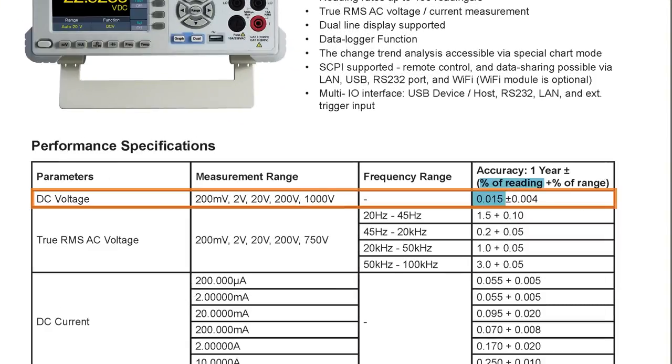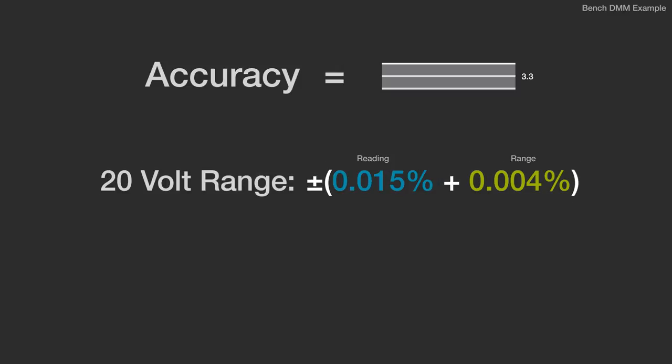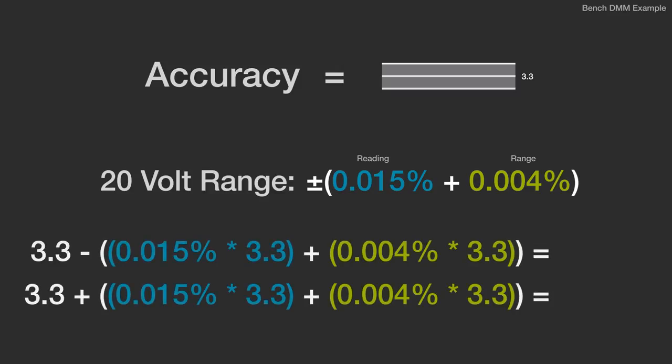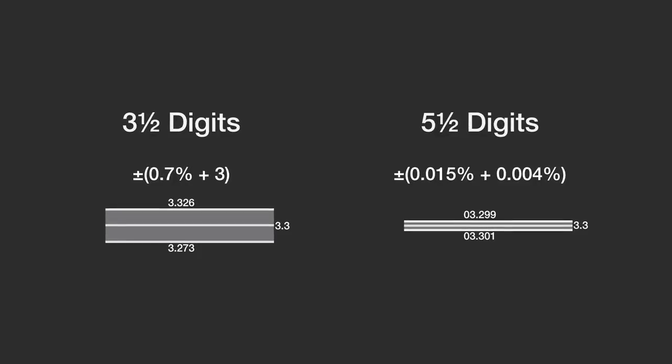It is specified as 0.015 percent of the reading plus 0.004 percent of the range, which is way better than a handheld. For our example 3.3 volt signal, it would require the 20 volt range, which means the math works out to be from 3.299 and 3.301. Keep in mind that because we used the 20 volt range for this measurement, we effectively lost one digit of precision, but we still ended up with a much tighter range or more accuracy.